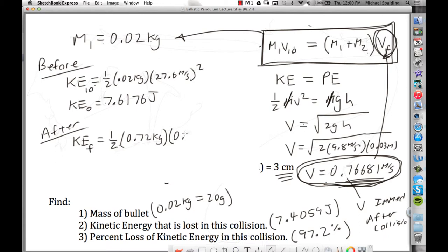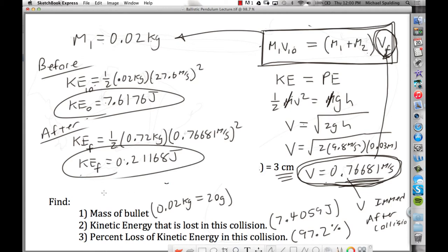And then the velocity after the collision, we calculated that to be 0.76681. And then that gives us kinetic final after the collision, 0.21168 joules. So the kinetic energy lost is the difference between those. So you subtract those two numbers and you get 7.4059 joules. Wait. That's not final. Sorry. This should say kinetic energy lost.